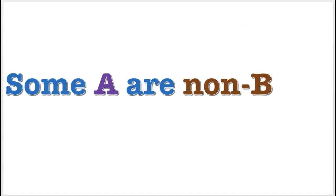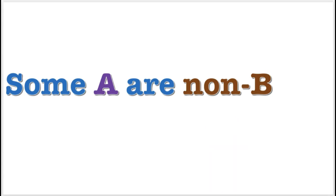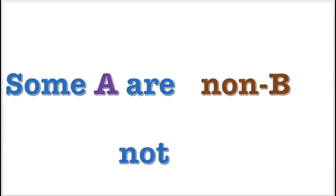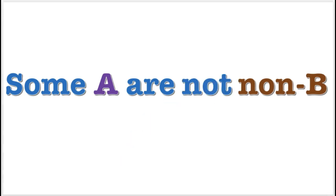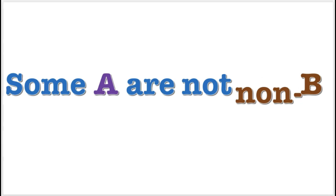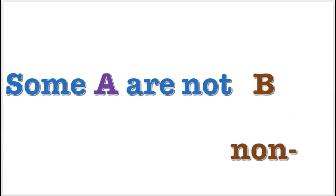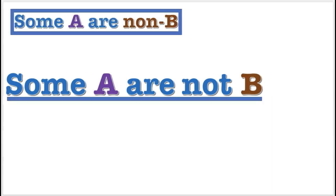Here's another example. This is an I-proposition with a negated predicate. First, we change the quality. Then, we change the predicate with its complement. Now you see the obverse.